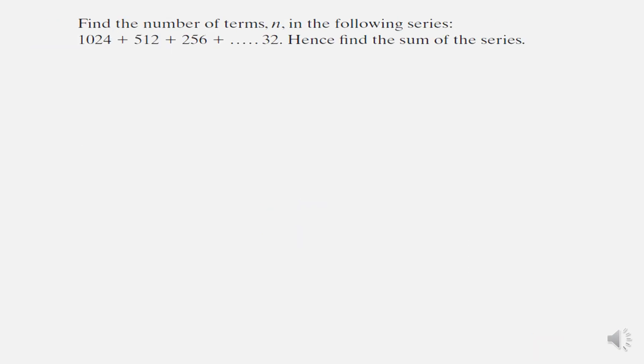Another question: find the number of terms n in the following series. It gives us the start of the series and the last term, and hence find the sum of the series. Our first job is to find out which position in the series is 32. So which term is it? Let's write down what we do know. We know that a is 1024. To find r, we take any term and divide it by the previous term, and that will give you r equals 1 over 2, or half. So you can see that each time the numbers are being halved.